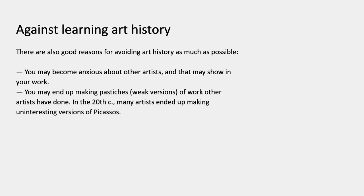You may also end up making pastiches — weak versions of work that other artists have done. In the 20th century, the big example is Picasso. The century is absolutely full of painters all around the world who looked up to Picasso and were deeply influenced by him, but were not capable of carrying his work forward or answering it in an interesting way. They ended up making often very uninteresting versions of Picasso's work. There must be hundreds of thousands of pastiches of Picasso in the 20th century.